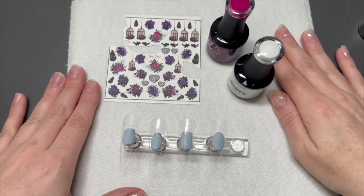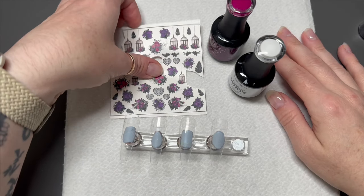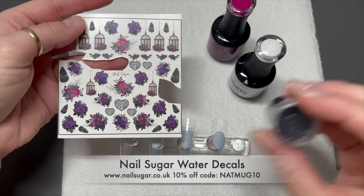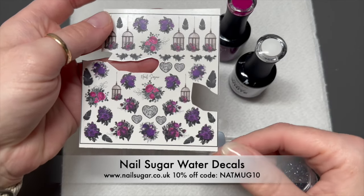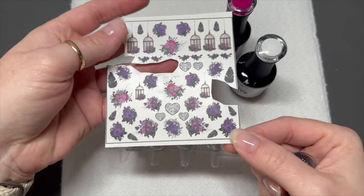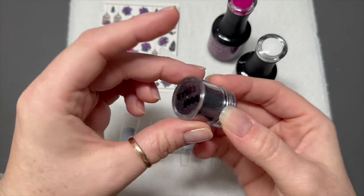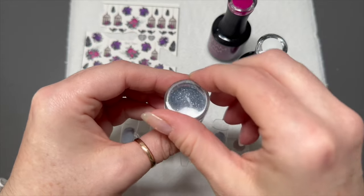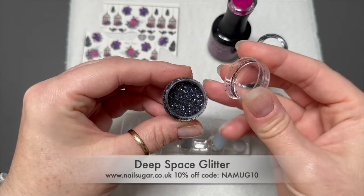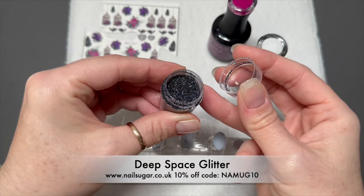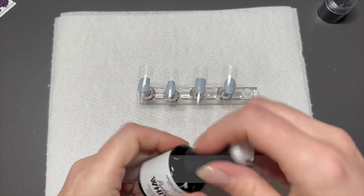Hi everyone, welcome back to another video. In today's video I'm going to be using these nail sugar decals—the ones with the bird cages, feathers, and stuff—and I'm also going to be using this Deep Space black holographic fine glitter and Madam Glam gel polishes.